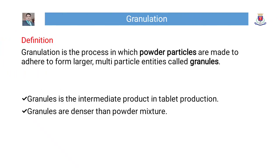Definition. Granulation is the process in which powder particles are made to adhere to form larger multiparticle entities called granules. Granules are the intermediate product in tablet production. Granules are denser than powder mixture.